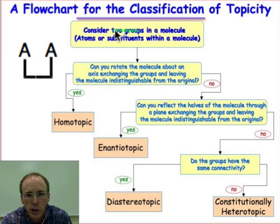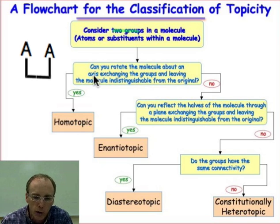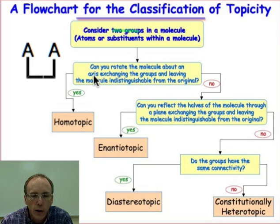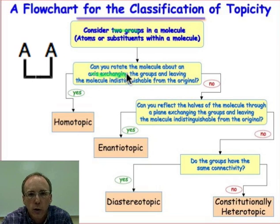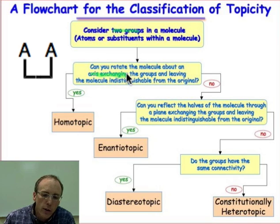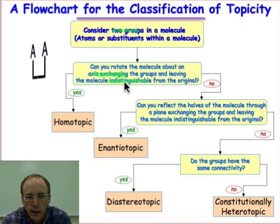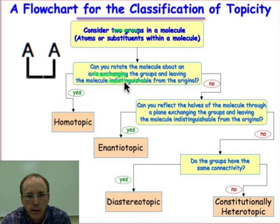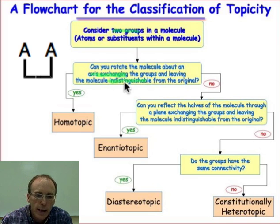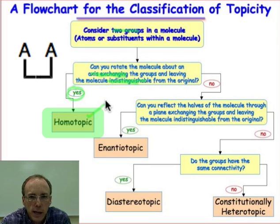The first question is: can we find a rotation axis which exchanges the groups in question? We need to rotate the molecule and look for an axis of rotation that exchanges the groups we're interested in — one chlorine atom to another — and find a rotation axis that leaves the molecule indistinguishable from the way it looked originally. It looks exactly the same before and after rotation, but we exchange the groups in question. If I can find such a rotation, those groups are homotopic and I'm done.